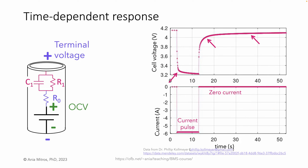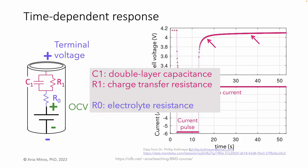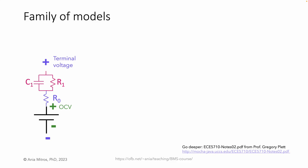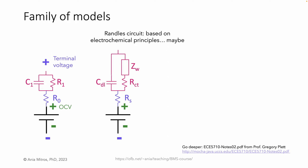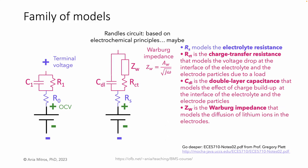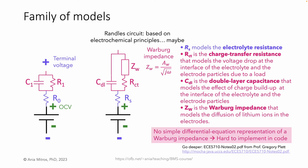Our newly added C1 and R1 have names. C1 is the double-layer capacitance and models charges building up at the interface of the electrolyte and the electrode particles. R1 is named charge transfer resistance and models the voltage drop over the electrode-electrolyte interface due to a load. There are a variety of models implementing this concept, varying in how precisely they reflect the actual physics and in how easy they are to implement computationally. Remember, most battery management systems run on some embedded microcontroller with limited computational power. The Randles circuit adds a frequency-dependent impedance — the Warburg impedance. The Warburg impedance cannot be represented with a simple differential equation, so it is hard to implement directly in code.